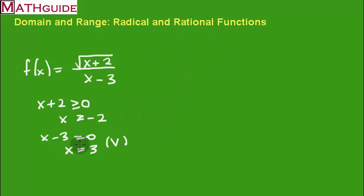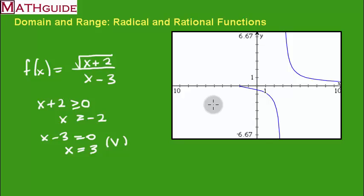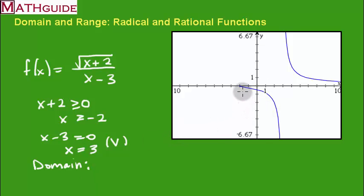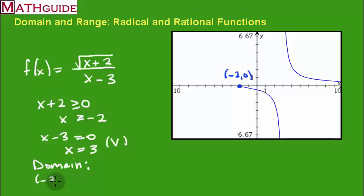The picture actually helps refine our domain, and I like to look at the picture as well as the algebra. Now that we have a picture of the graph, in combination with the domain work we've done, we can piece this together to find the domain. There are two branches to this discontinuous curve. Looking at the leftmost branch, we can see that this point is negative two, zero — the leftmost point in the graph — and x does equal negative two according to our domain calculations.